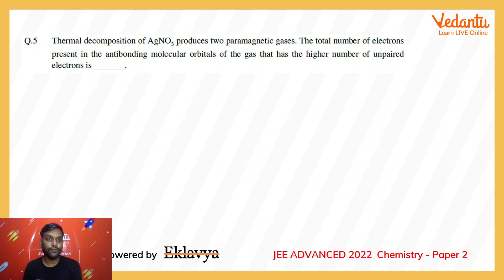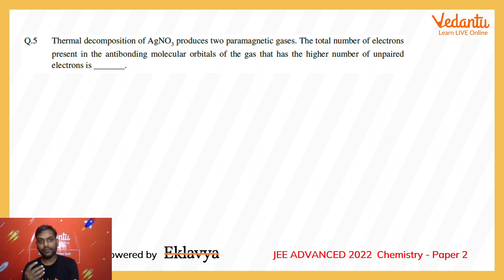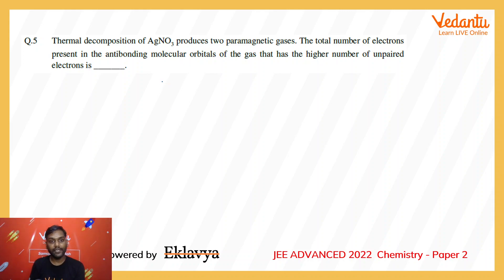Nitrates usually on heating produce metal oxide plus NO₂ plus O₂, except the nitrates of sodium, potassium, rubidium, and cesium, which produce nitrite and O₂. But the oxides of silver and mercury are not stable, so they further decompose to form metal and oxygen. So basically if I heat silver nitrate, I will be getting silver residue plus brown fumes of NO₂ and oxygen.